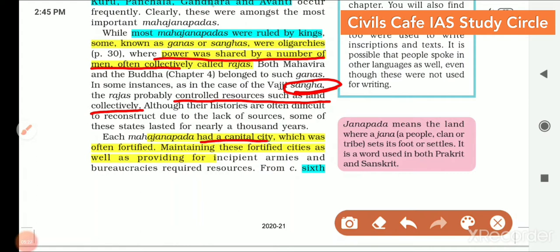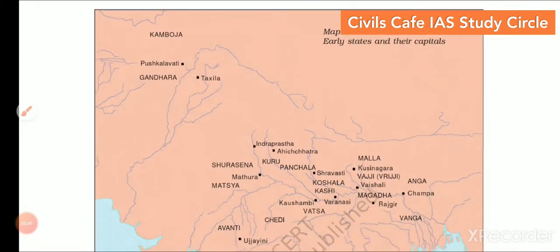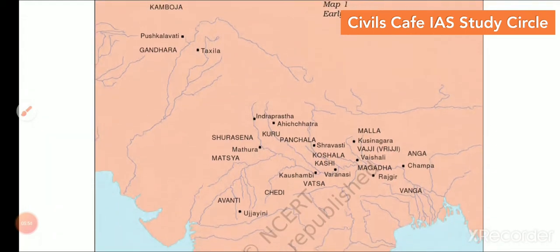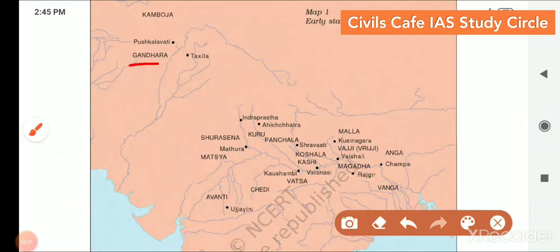Each Mahajanapada had a capital city which was often fortified. To prevent external attacks, fortification was a norm during those times. Maintaining fortified cities as well as providing for armies and bureaucracies required resources. The given map shows early states and their capitals — Gandhara, Surasena, Avanti, Magadha, Vajji, Anga, Koshala, etc.